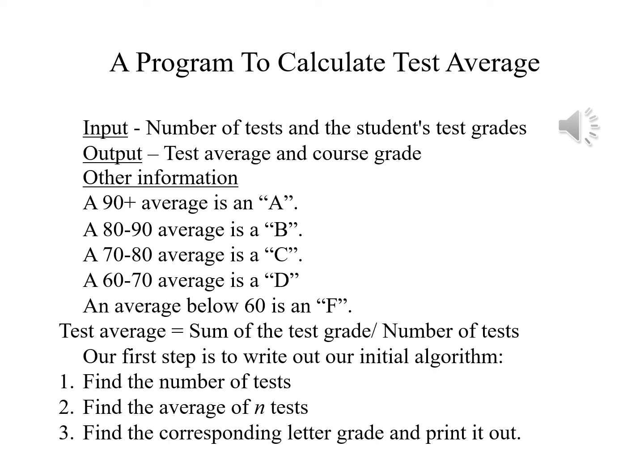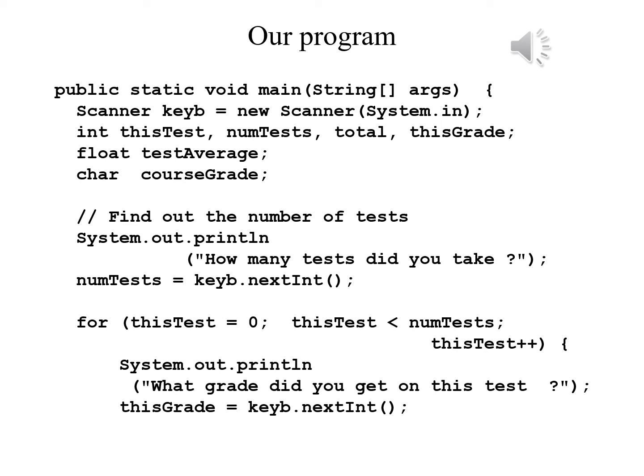The test average is the sum of the tests divided by the number of tests. Our initial algorithm is: find the number of tests, find the average of n tests, and provide the corresponding letter grade and print it out. We have some variables to declare: a Scanner called keyboard equals new Scanner(System.in), int thisTest for counting tests, numTests for the total number, totalThisGrade, float testAverage, and char courseGrade.